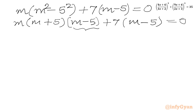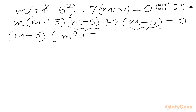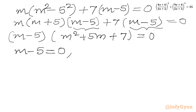Now we take (m minus 5) common out, giving us (m minus 5) times (m times (m plus 5) plus 7) equal to 0, which simplifies to (m minus 5) times (m square plus 5m plus 7) equal to 0. So either m minus 5 equals 0, or m square plus 5m plus 7 equals 0.